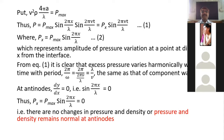From this equation it is clear that excess pressure varies harmonically with time. The period is 2π/ω = λ/v, where λ is wavelength and v is velocity — the same period as that of the component waves. So excess pressure in the stationary wave has the same period as the incident and reflected component waves.